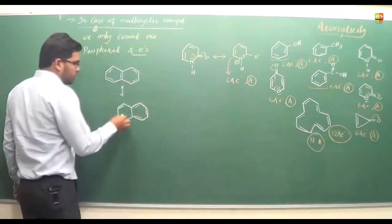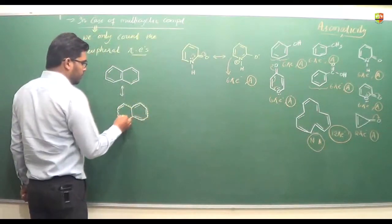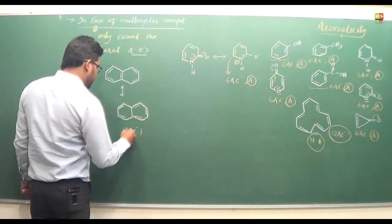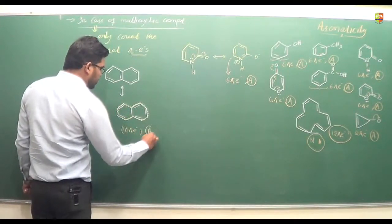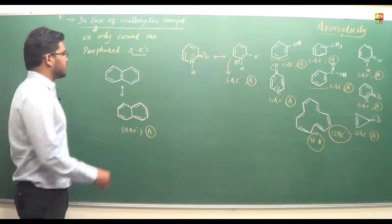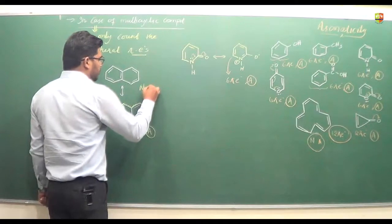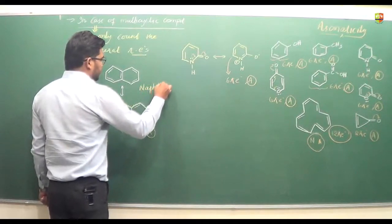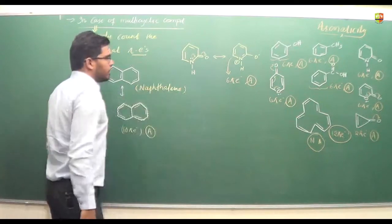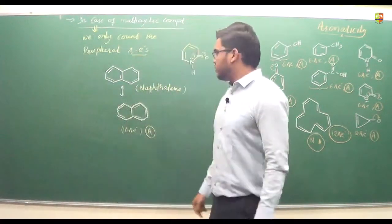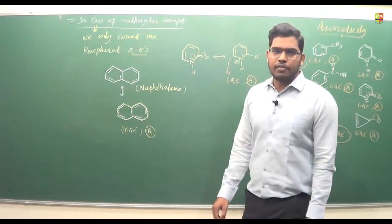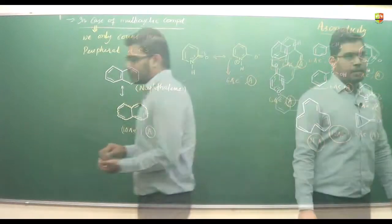Here the number of pi electrons are 1, 2, 3, 4, 5 — so we have 10 pi electrons. 10 pi electrons is aromatic for n equals 2. So this compound, which is naphthalene, is aromatic. We will see a few more examples of how to count peripheral pi electrons.